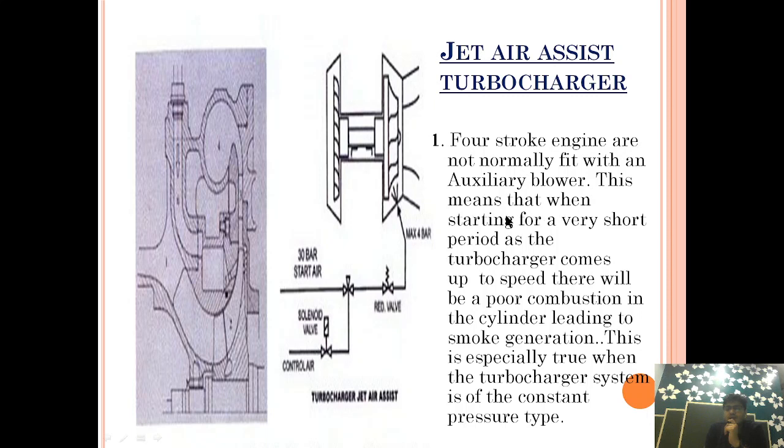When starting, for a very short period as the turbocharger comes up to speed, there will be poor combustion in the cylinder leading to smoke generation. When you go to a ship, you'll observe that whenever the generator starts, black smoke comes from the exhaust trunking. The question is: how can we reduce this black smoke generation?